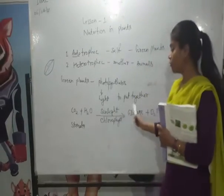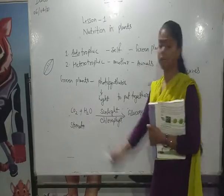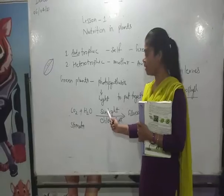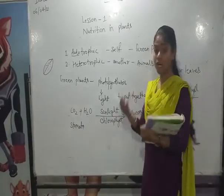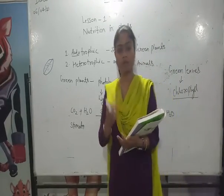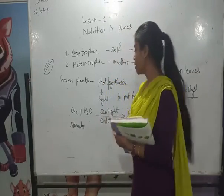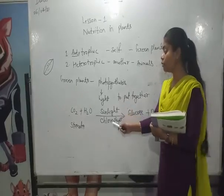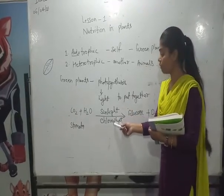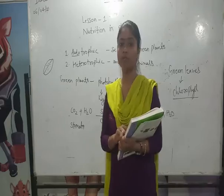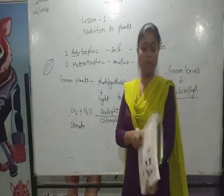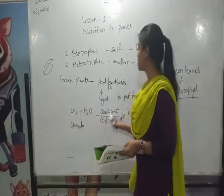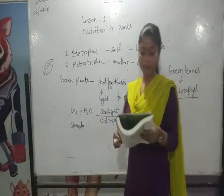Sunlight is necessary to make food. Chlorophyll is the substance that traps this light to make food. For example, just as we use gas to cook food — without gas there is no food — similarly, without chlorophyll, there is no use of sunlight. Chlorophyll absorbs sunlight and provides the energy needed to synthesize glucose from the raw materials.